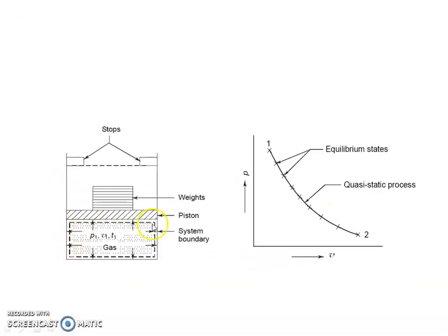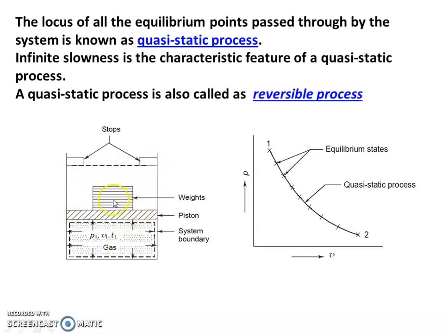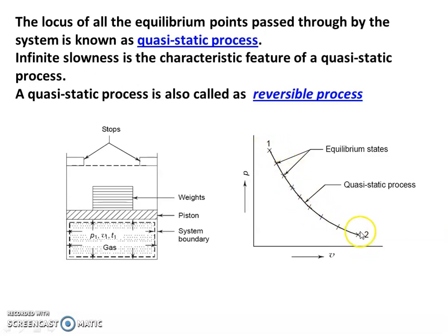Now we take the same piston, cylinder, and gas, but instead of a single weight, we divide it into a number of smaller weights. Instead of removing the entire weight at once, we remove one by one. Removing the first weight allows expansion to the next level, then the second, third, fourth, fifth, sixth, seventh weight — each removal bringing the system to a new equilibrium level. The initial state is equilibrium, every intermediate point along the path is equilibrium, and the final condition is also equilibrium. When all points in a process are equilibrium states, the process is called a quasi-static process. The locus of all equilibrium points passed through by a system is known as a quasi-static process.